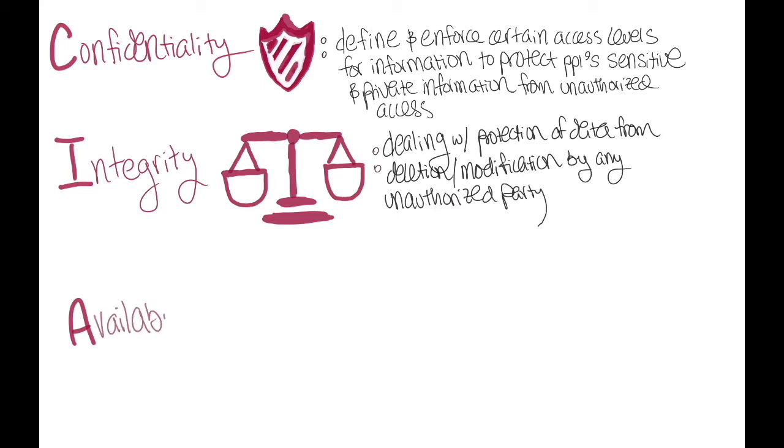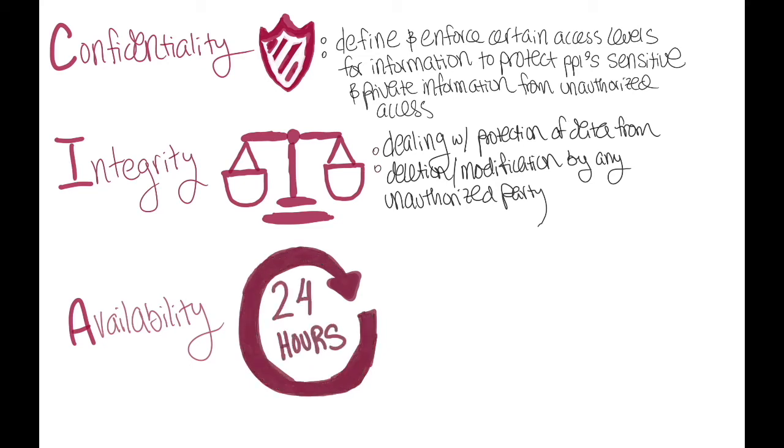Availability refers to the actual accessibility of your data. Authentication mechanisms, access channels, and systems all have to work properly for the information they protect and ensure it's available when it is needed.